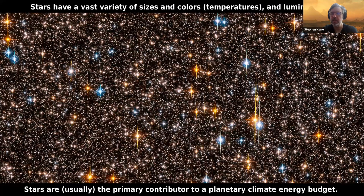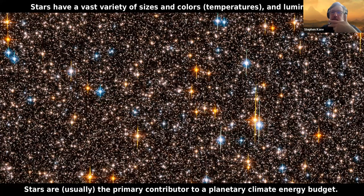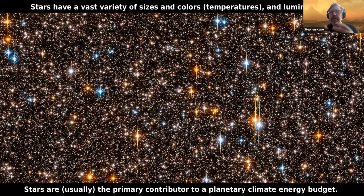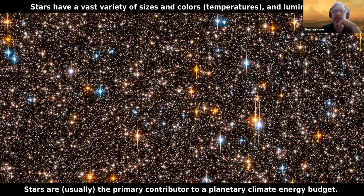The star is overwhelmingly the major contributor to a planetary climate energy budget. There is some energy received from the planet's interior as it cools, but for the most part that is much smaller than the energy received at the top of the atmosphere. Stars are very important — there's a huge range of them. We orbit what is sometimes called a fairly average star in terms of size and mass, though smaller stars are much more common than the Sun. Different stars have different temperatures, which profoundly affects the amount of energy received by the planet.